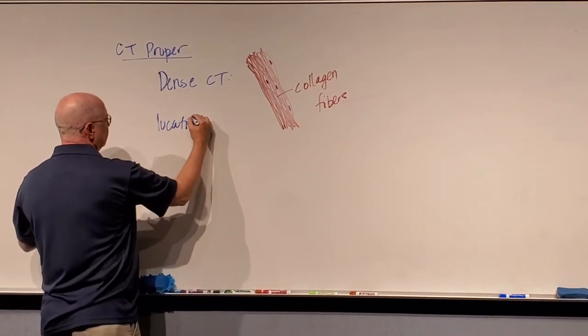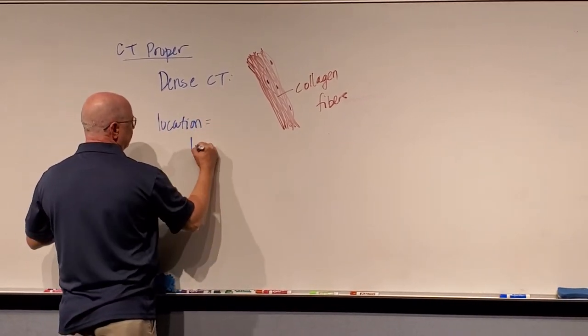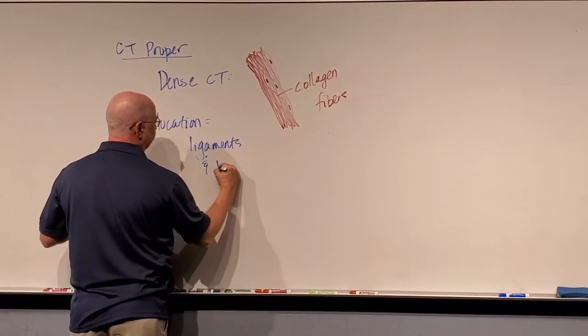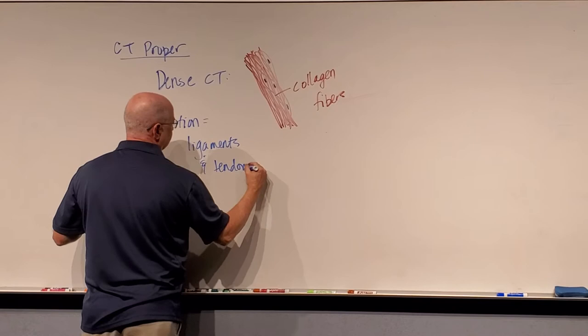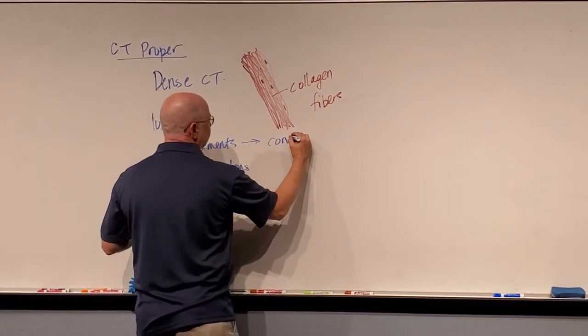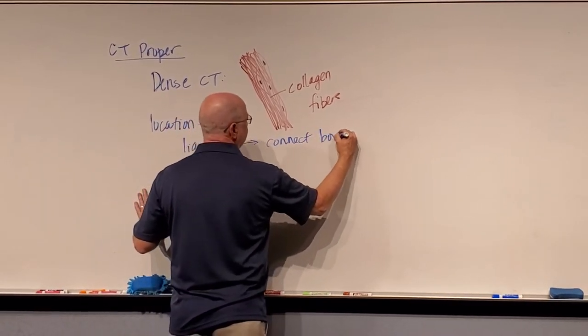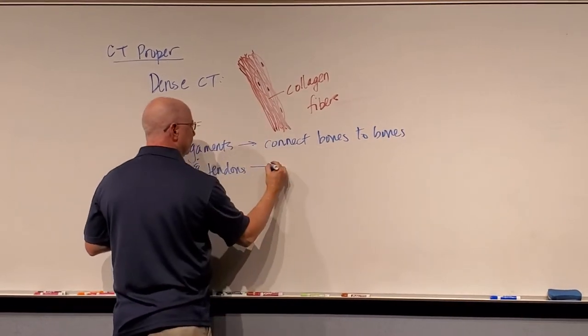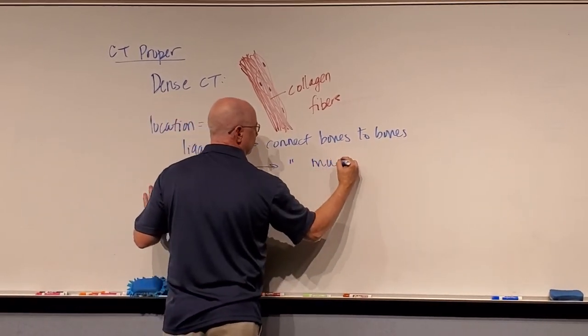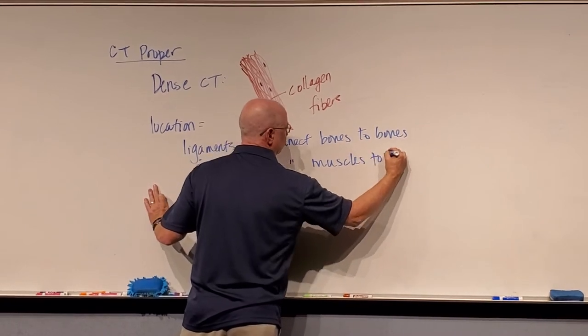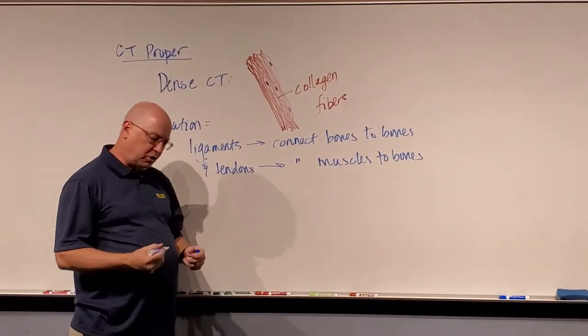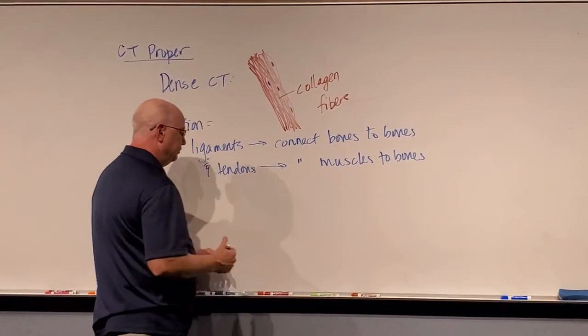The location is ligaments and tendons. Ligaments connect bones to bones. Tendons connect muscles to bones. We find these where joints are, where two different bones would meet.